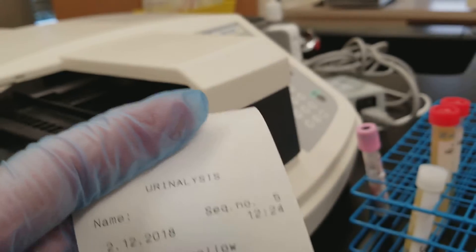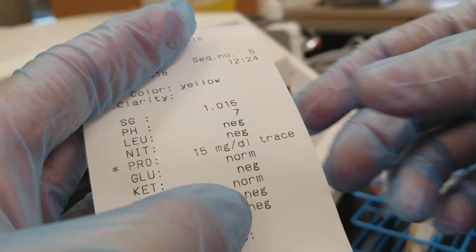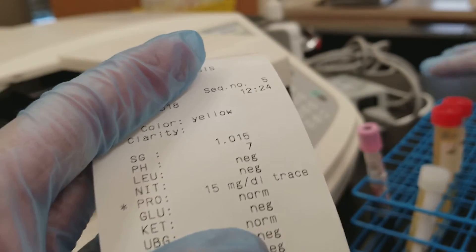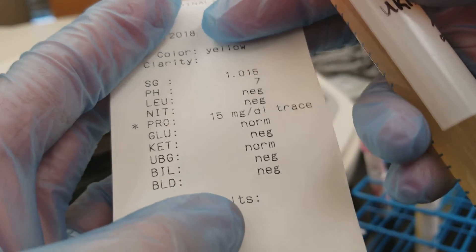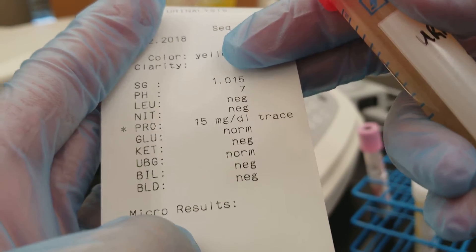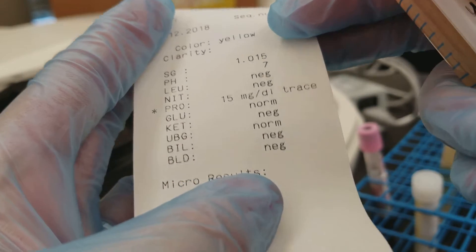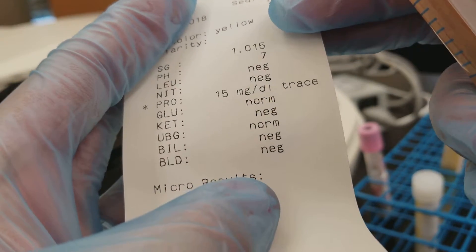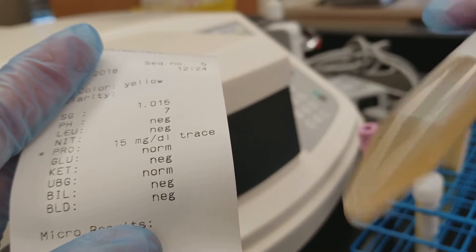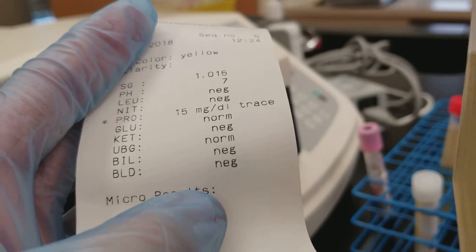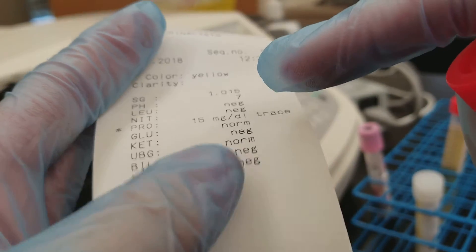This guy, it says yellow again, we have to do the clarity and specific gravity and everything is good but protein, there's trace protein. So there might be some glomerular damage because there's protein. The dipstick only measures albumin so there could honestly be a patient that has a protein that's negative but they have all other kinds of proteins in there that aren't albumin.